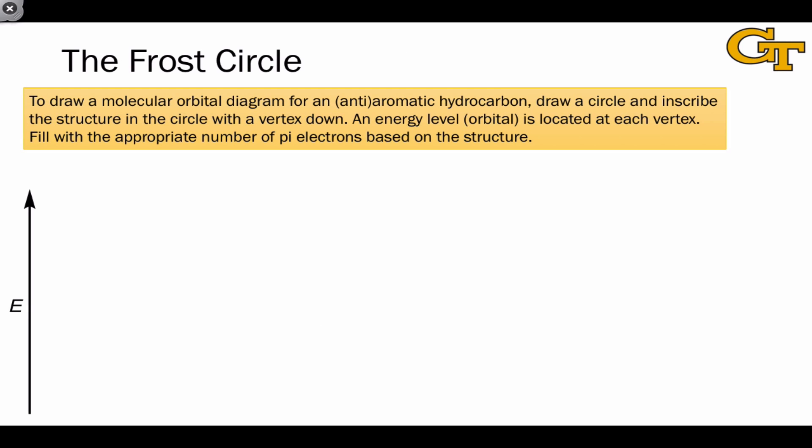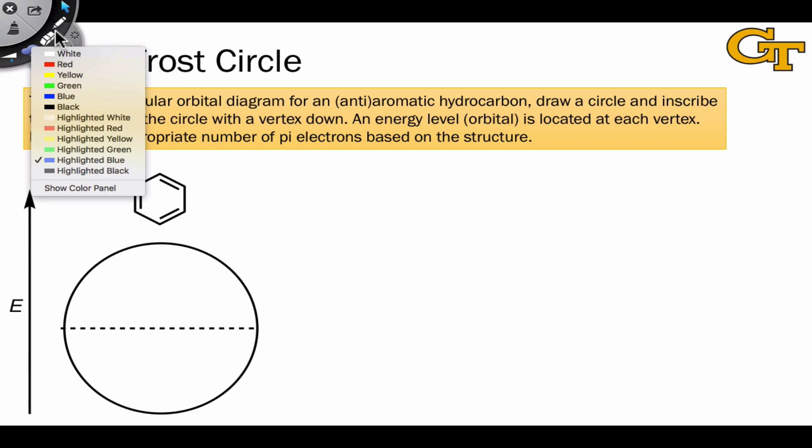This is what we call the Frost circle, and here's the basic idea. What we're about to generate is an orbital energy diagram, which is why I have an energy axis on the left-hand side of the slide. The first step of drawing a Frost circle is to start with the molecular structure and place one of its vertices at the bottom.